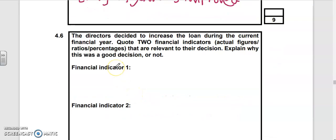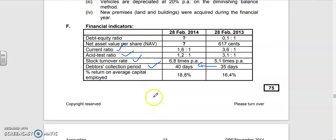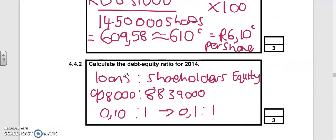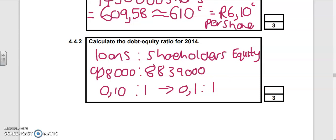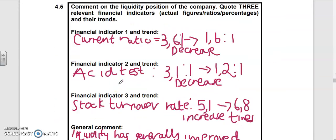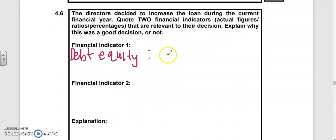The directors decided to increase the loan during the current financial year. Quote two financial indicators to explain if it was a good decision or not. First, check your debt-equity ratio. Last year was 0.1 is to 1, and this year we calculated it to be 0.1 is to 1 as well. Debt-equity ratio stayed the same.